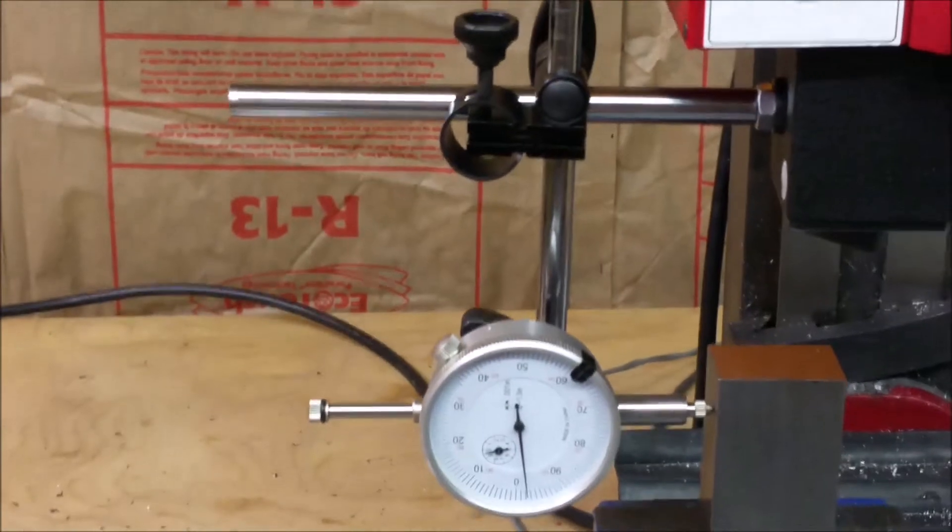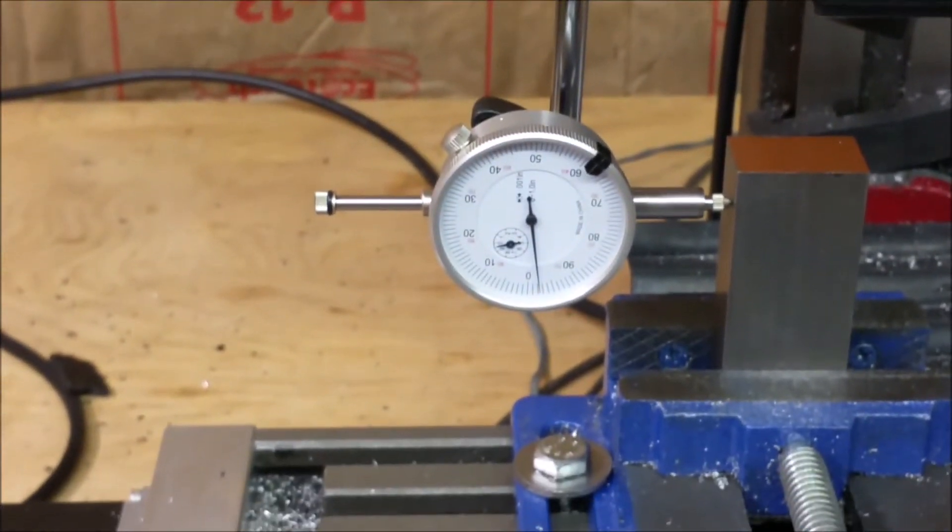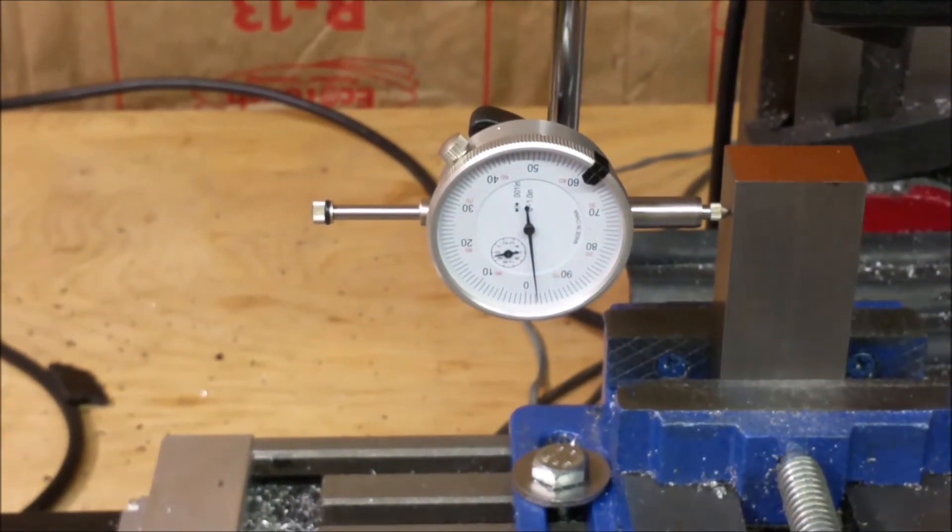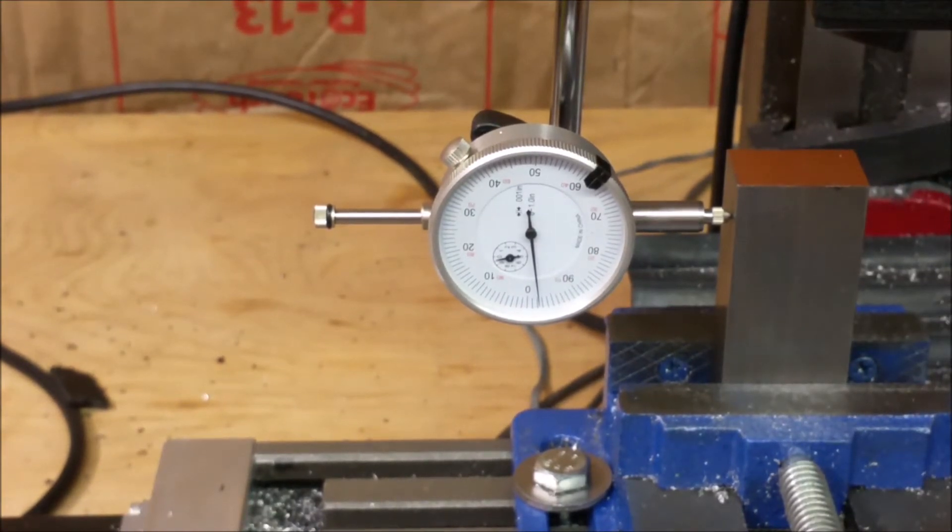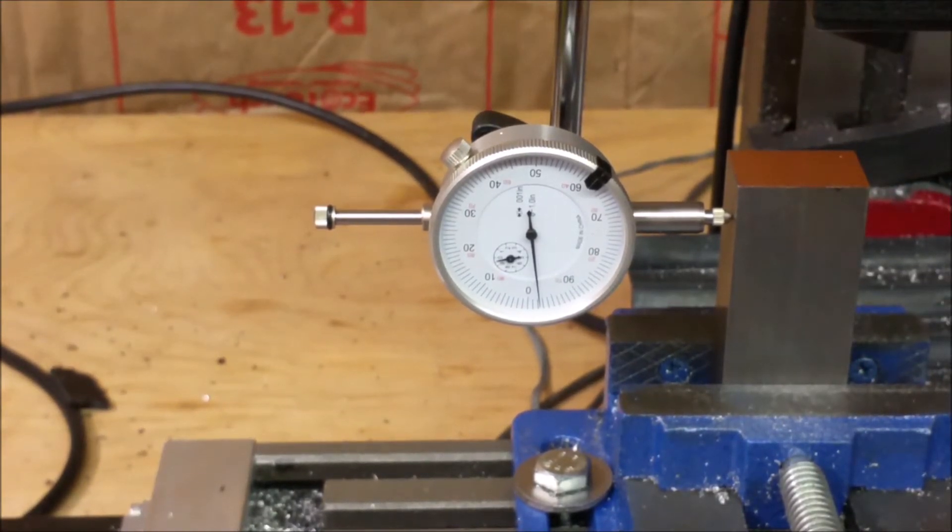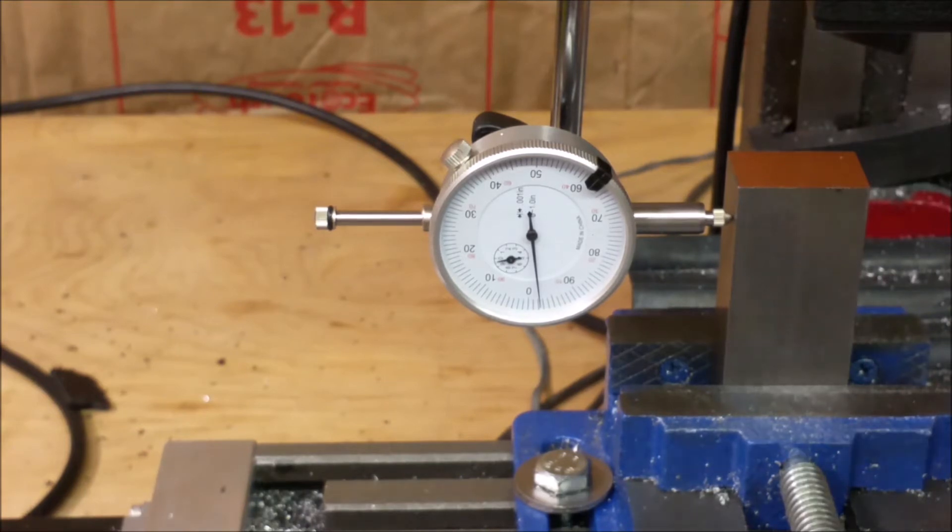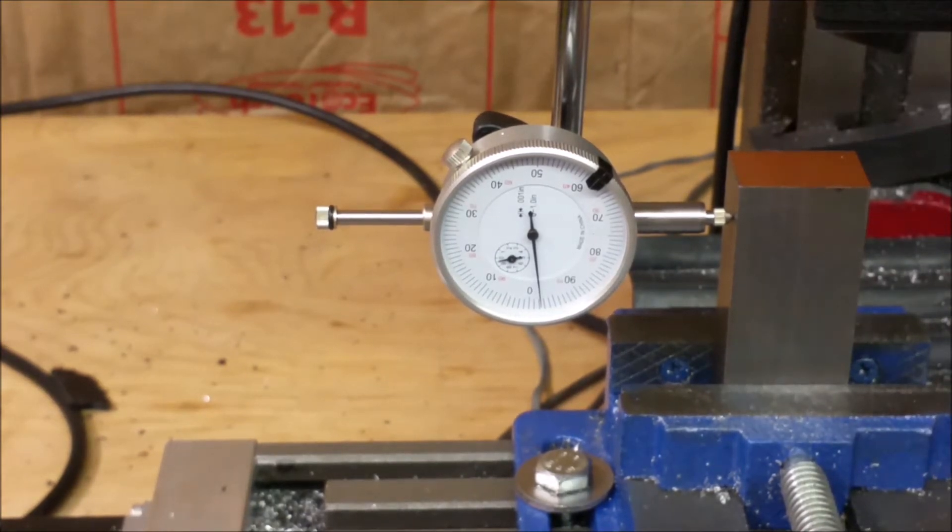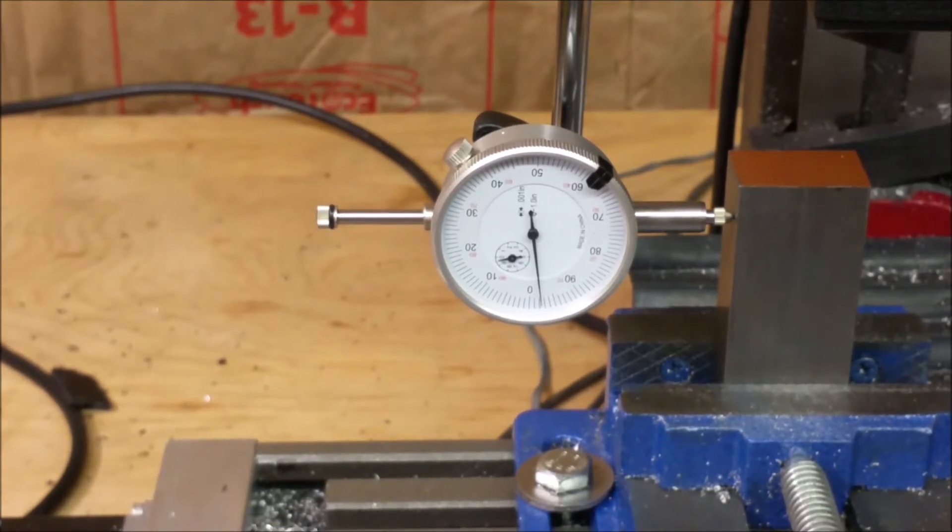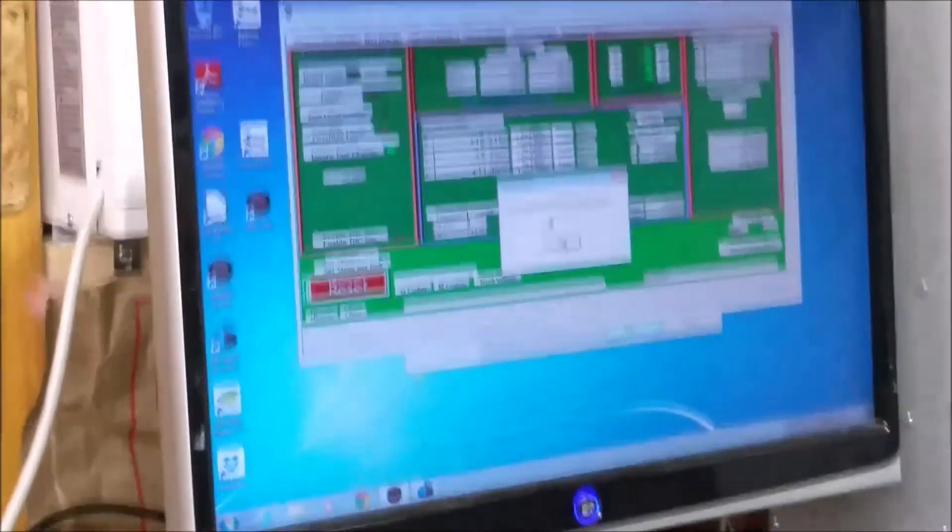Now over here we can see that it moved nearly about two thou short, or two and a tenth or something. We'll just call it two, but we got to keep that other one thou in mind. So we'll just call it three thou short. So it's three thou short of an inch.